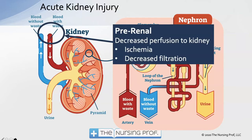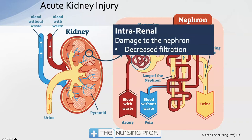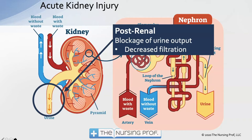In acute kidney injury, we categorize by source. If it's insufficient blood flow to the kidney, we call that pre-renal, resulting in ischemia and decreased filtration. If damage occurs directly to the nephron — most often the glomerulus itself — we call that intra-renal. Damage enough nephrons and we get renal failure. If it's a blockage of urine flow causing back pressure on the glomerulus, we call that post-renal.